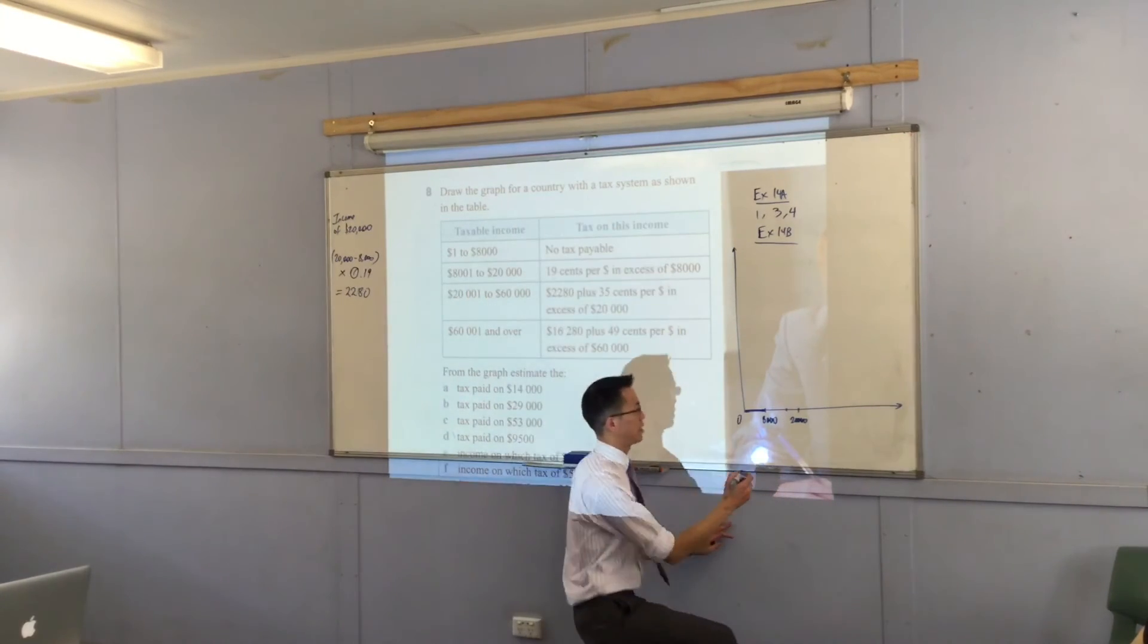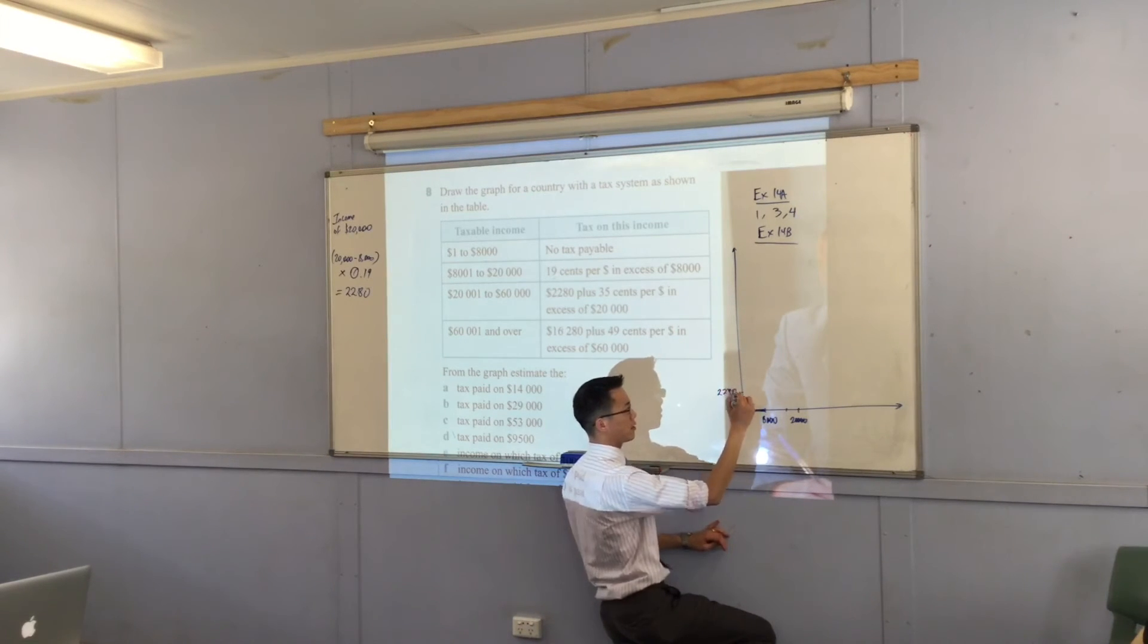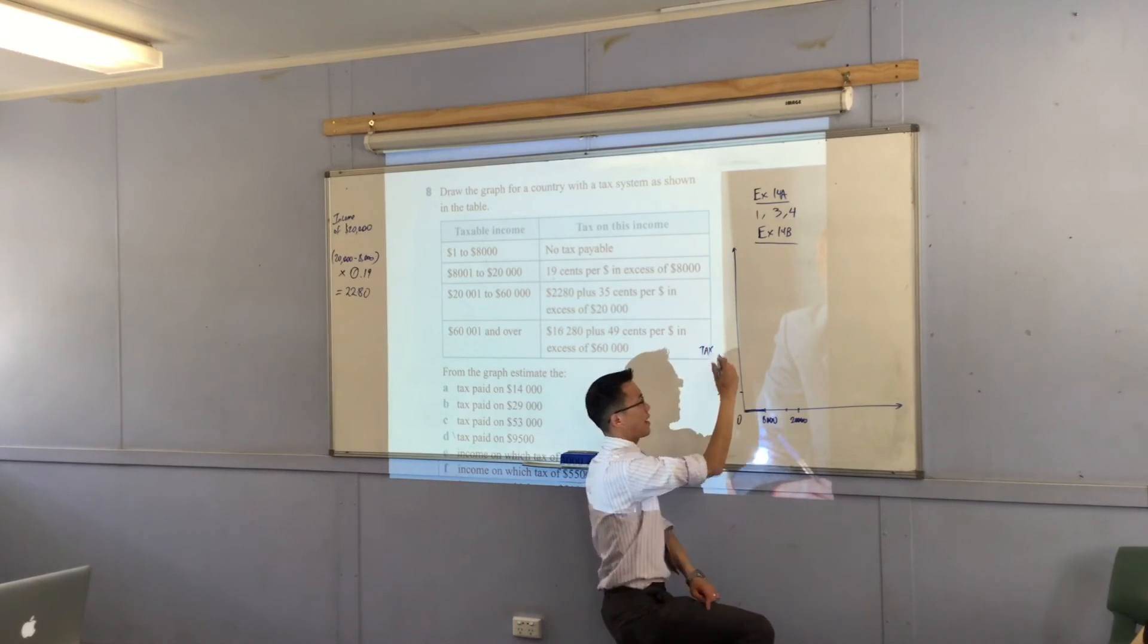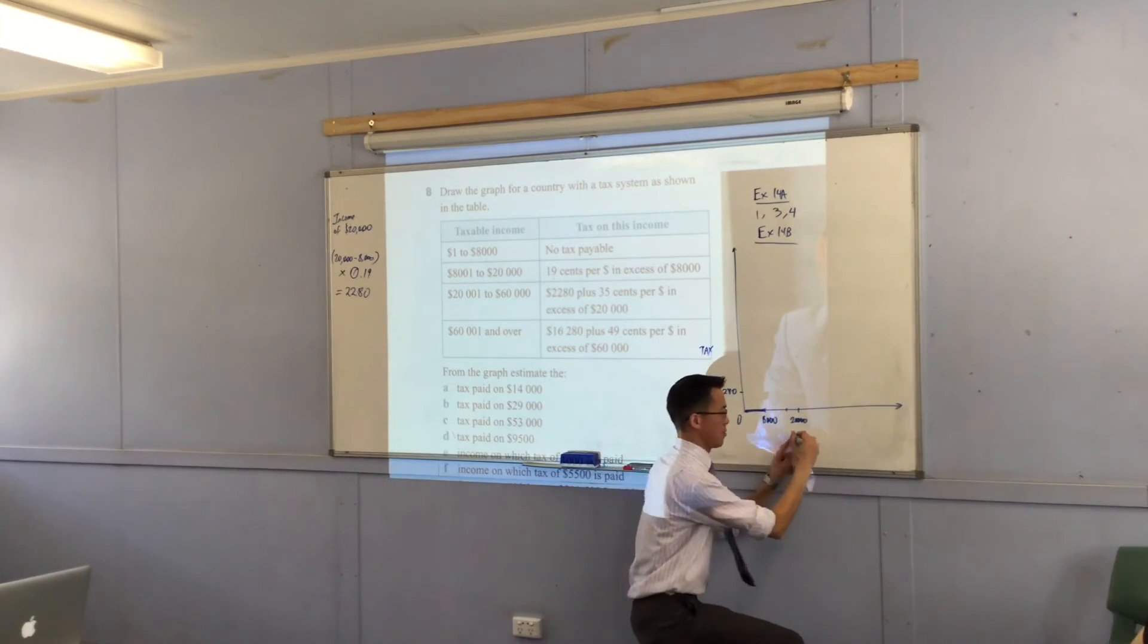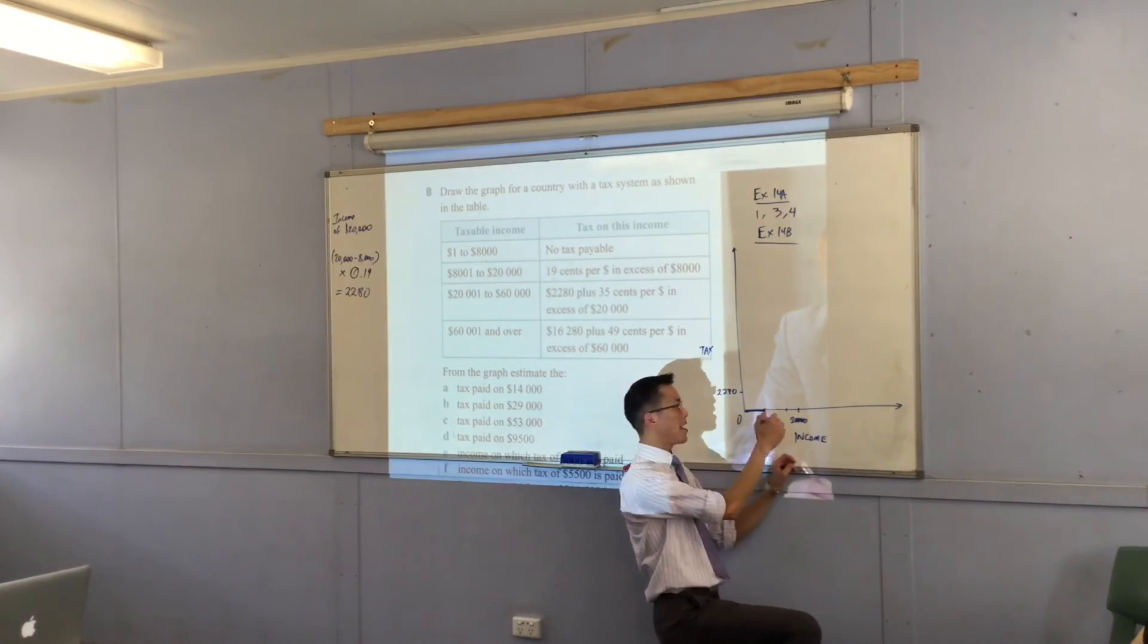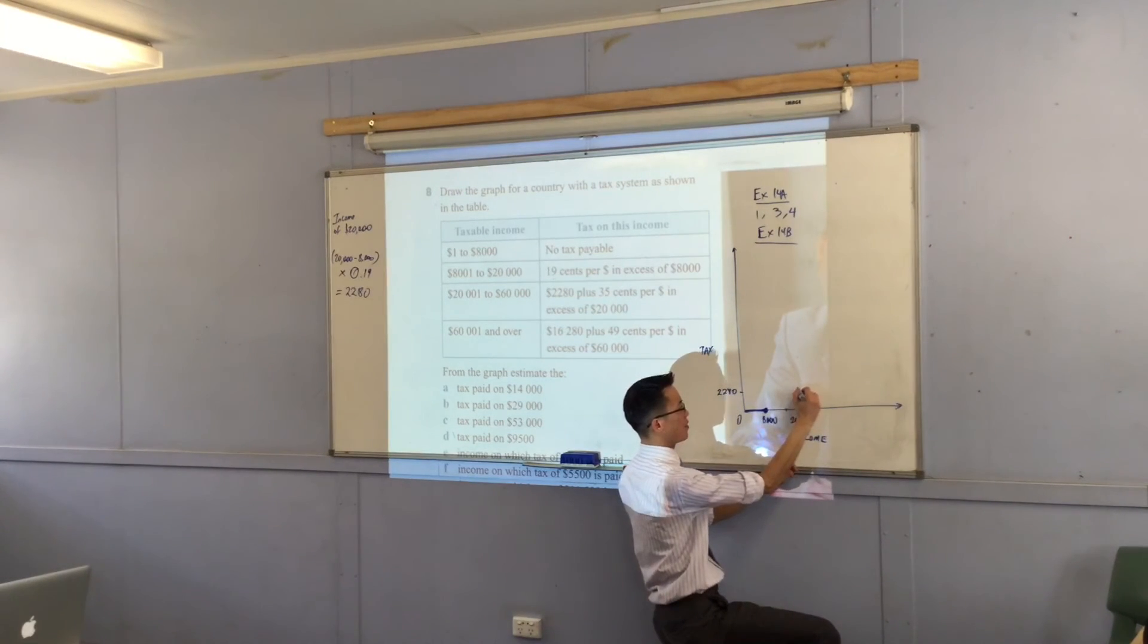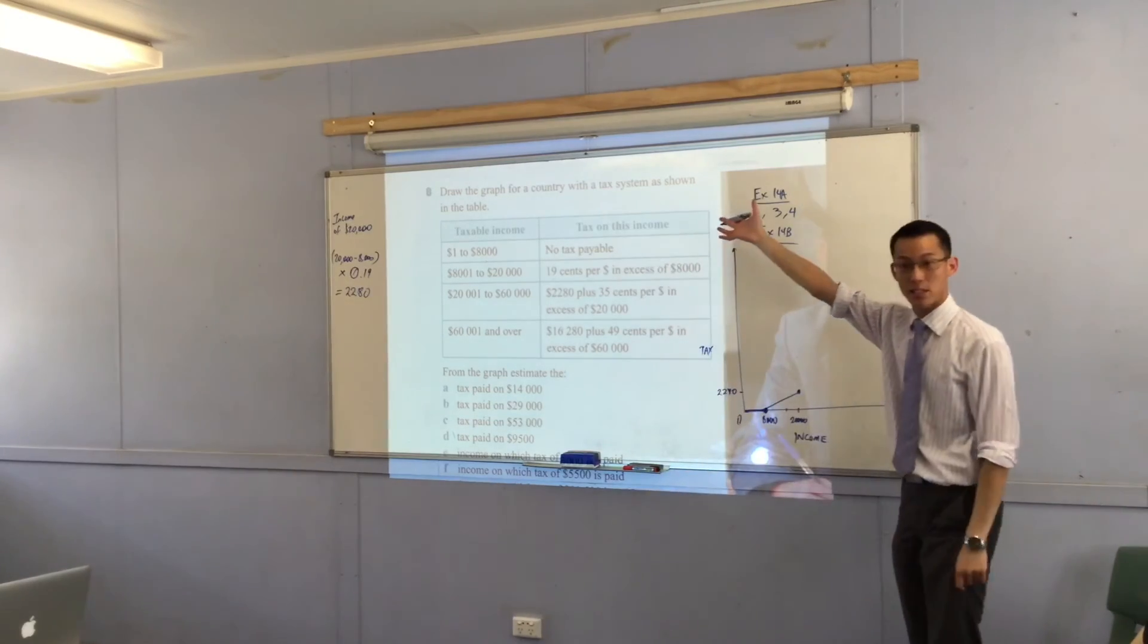So let's plot that somewhere on here. Let's put, what did we say it was? $2,280. Now, this is my tax axis. What's this axis? This is my income. Yeah, very good. Taxable income. So from here, there's my $8,000 tax-free. And I'm going to go up in a straight line to my $20,000 point. Okay. That's how much I'm earning. This, therefore, is how much tax I'm paying.